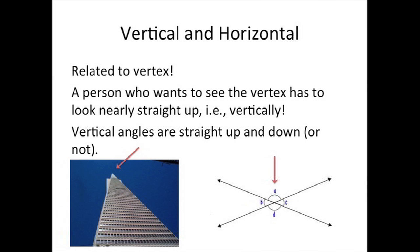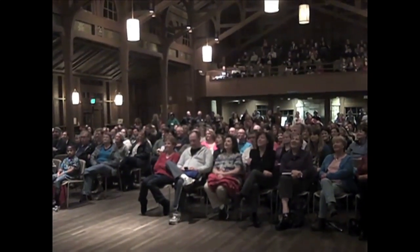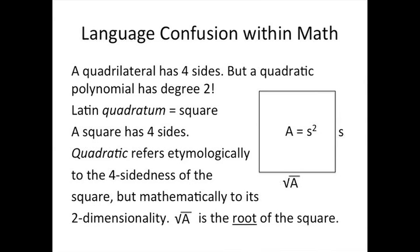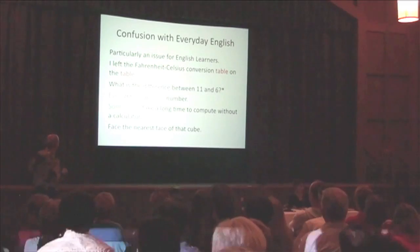And here are some vertical angles — but here are some horizontal vertical angles. Then there's language confusion within math: a quadrilateral has four sides, but a quadratic polynomial has degree two. How come? Well, it depends on whether you're talking about the number of sides or the dimension. And also, here's the square sitting on its root — the square root of the square.